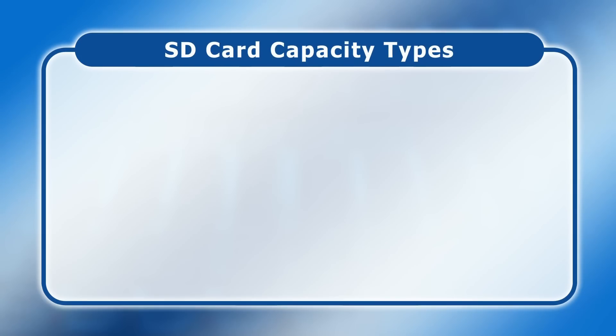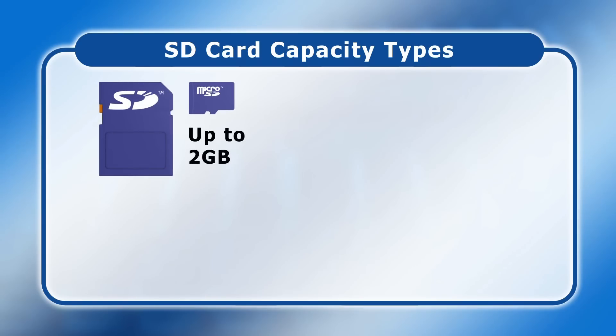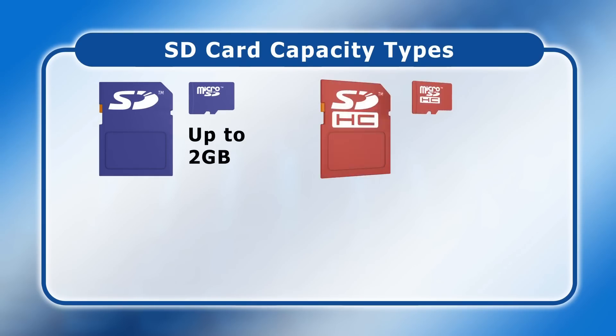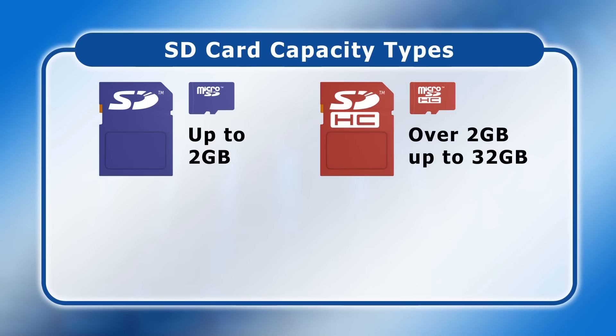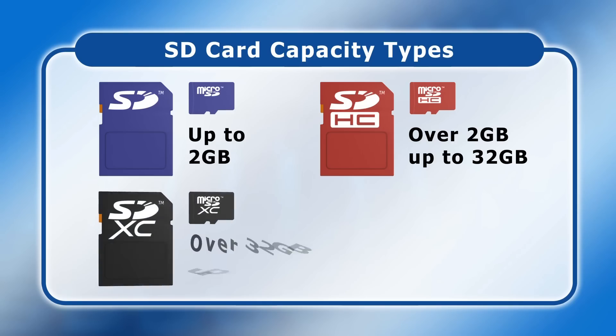All SD card form factors are available in a range of capacity types. The first of these is SD which supports cards up to 2 GB in size. Next comes SDHC or Secure Digital High Capacity for cards over 2 GB and up to 32 GB. After that we have SDXC or Secure Digital Extended Capacity cards with a size over 32 GB up to 2 TB.